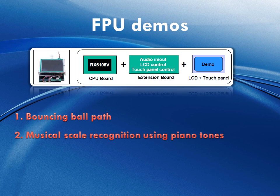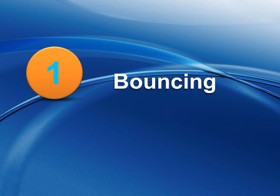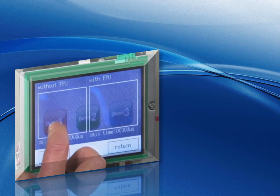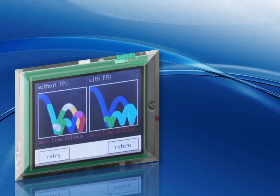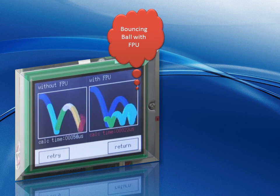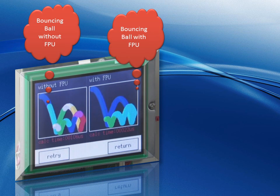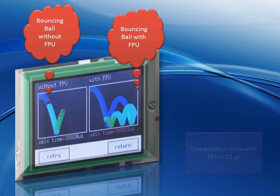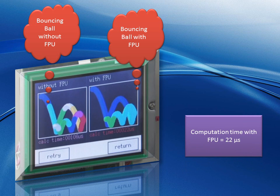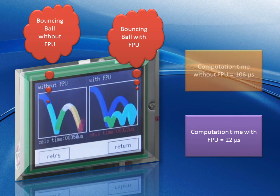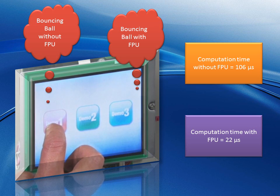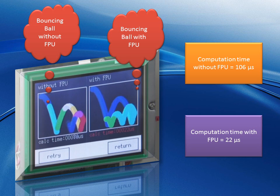The two demos are: the bouncing ball path, and the music scale recognition displaying a fast Fourier transform in real-time. The bouncing ball demo showcases the performance of the RX FPU by visually displaying a bouncing ball trajectory calculated with the FPU and without the FPU. With the FPU: 22 microseconds. Without the FPU: 106 microseconds. So approximately, it is five times slower without the FPU than when the FPU is present.